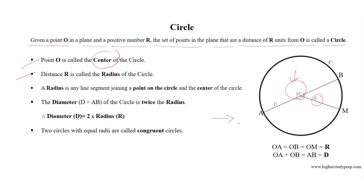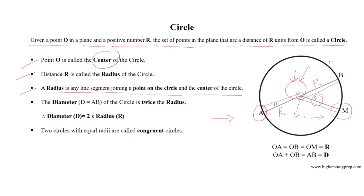We can see from this circle that OM equals OA equals OB equals R, representing the radius of the circle. A radius is any line segment joining a point on the circle and the center. For example, the radius OA joins point A and center O, and OM joins center O and point M on the circle. The diameter of the circle is twice the radius.